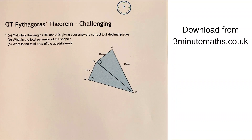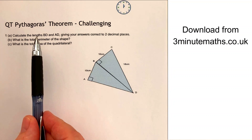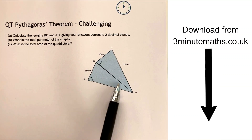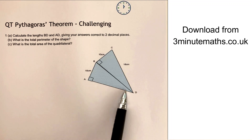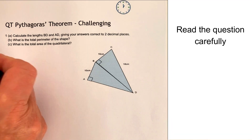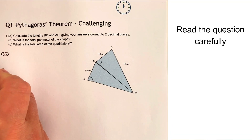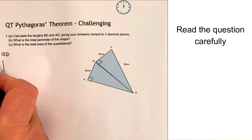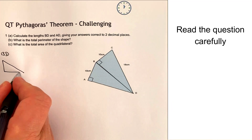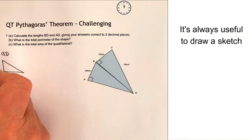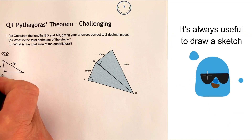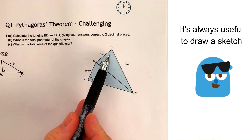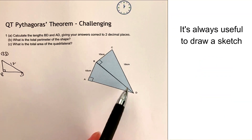So question number one, we're going to be looking at calculating the lengths BD and AD. The first thing I'll do is look at BD itself. I'm going to draw a quick sketch — it just makes my life a little bit easier — with 10 there, 18 there, and BD. So basically, this sketch is exactly the same as this triangle here.